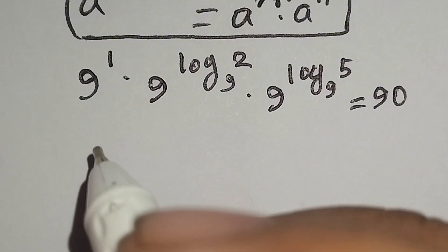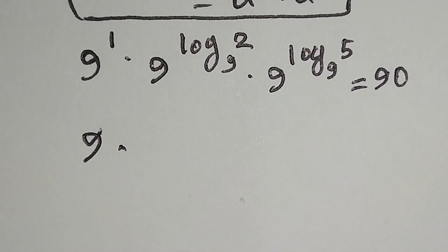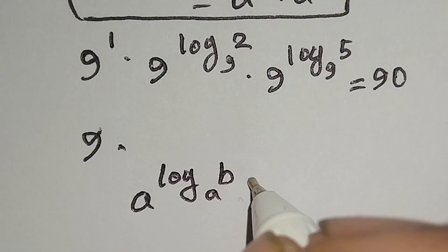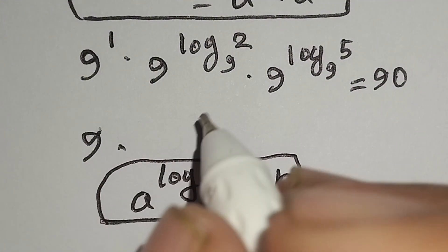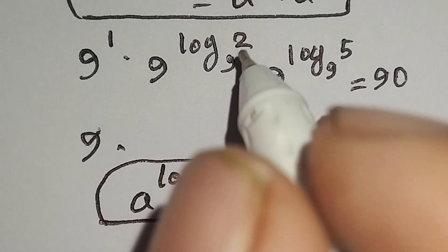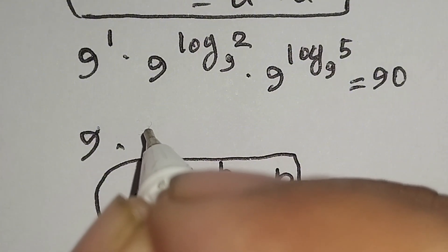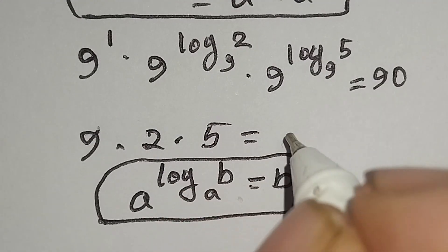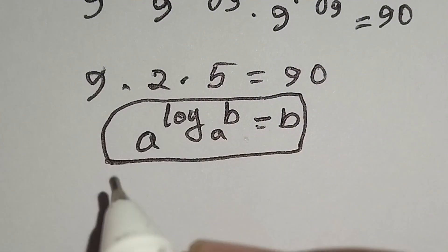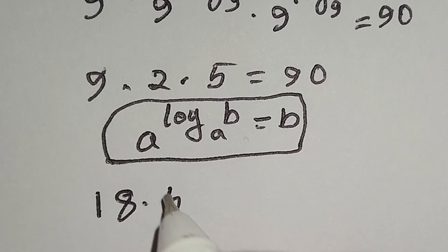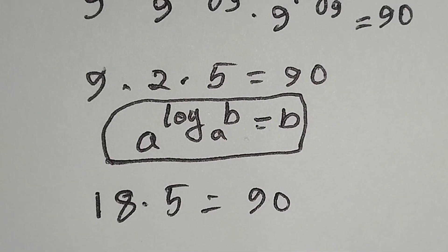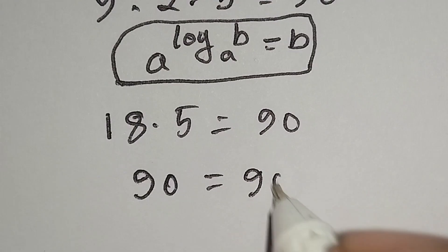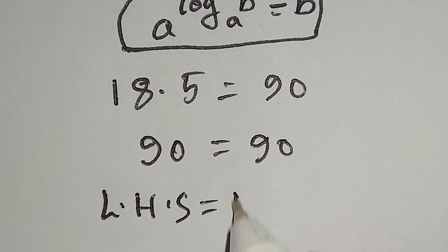Here 9 to the power 1 equals 9. Using the identity a to the power log b to the base a equals b, we get 9 times 2 times 5, which equals 18 times 5, equal to 90. So left hand side equals right hand side, which confirms our answer.